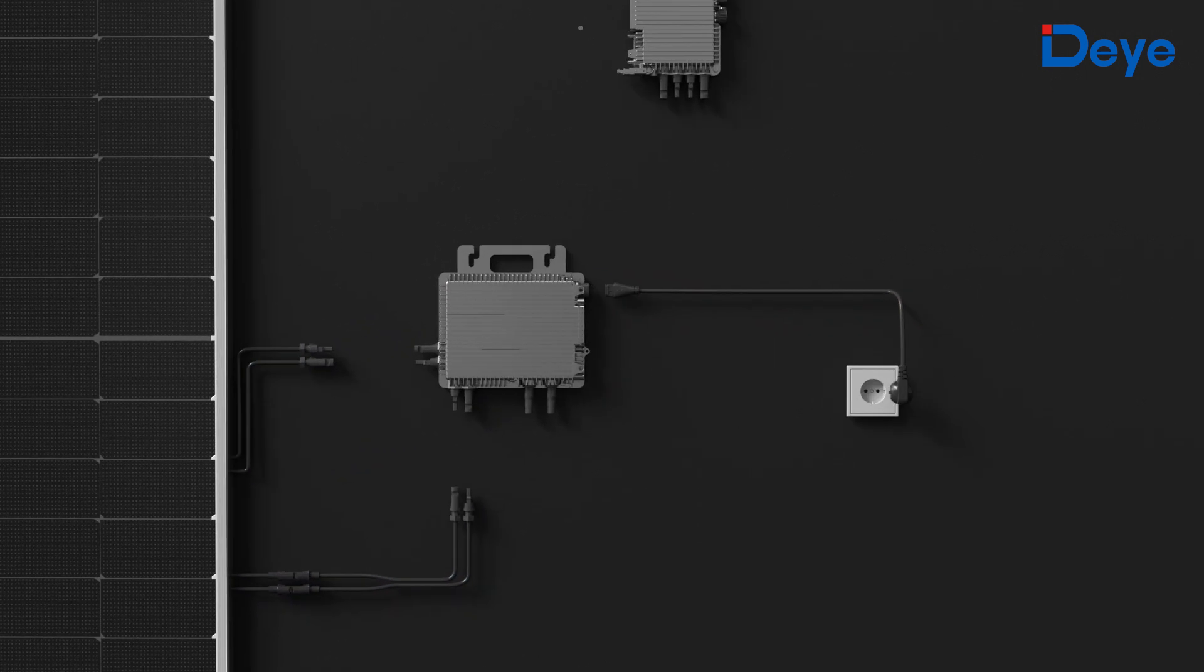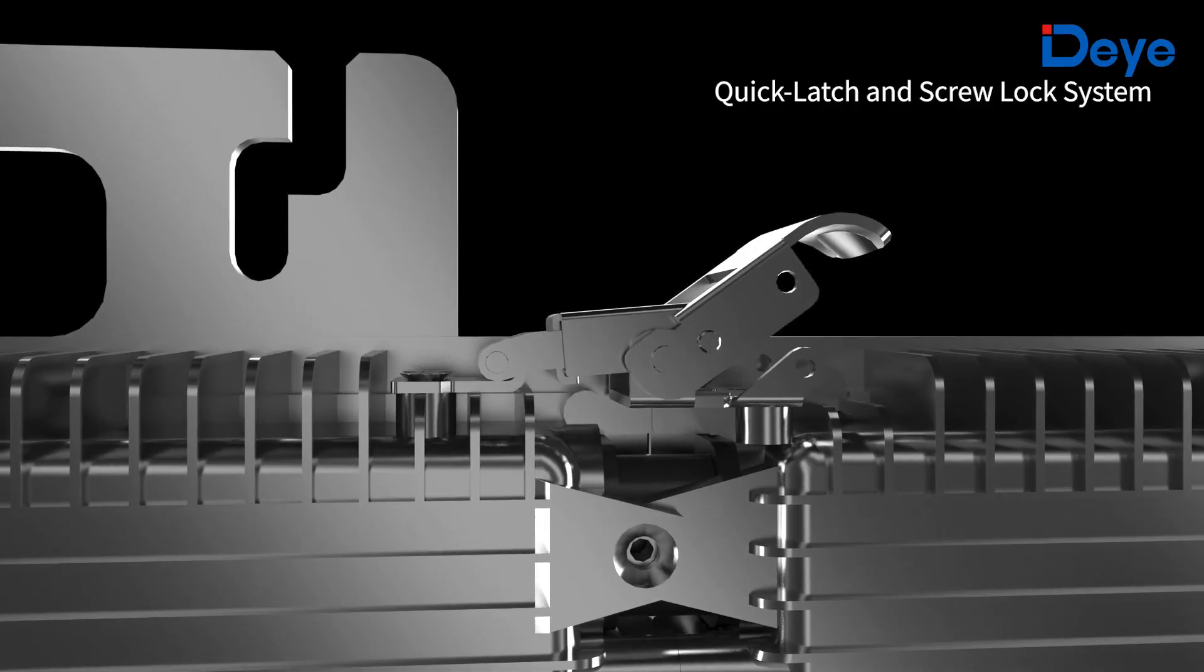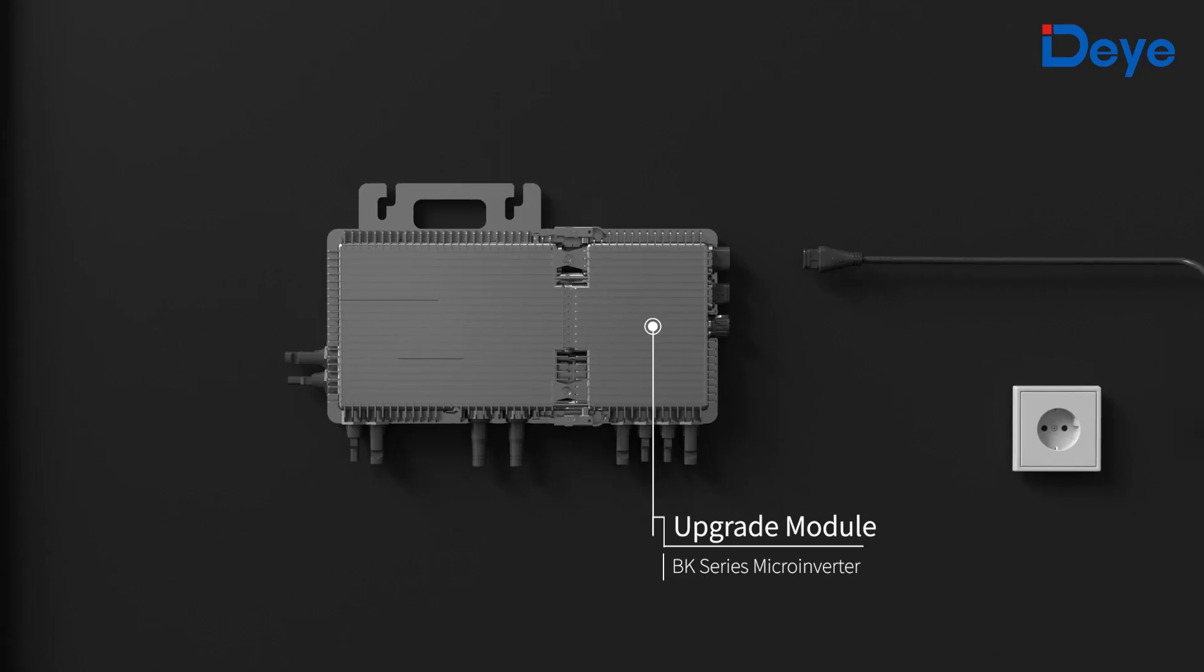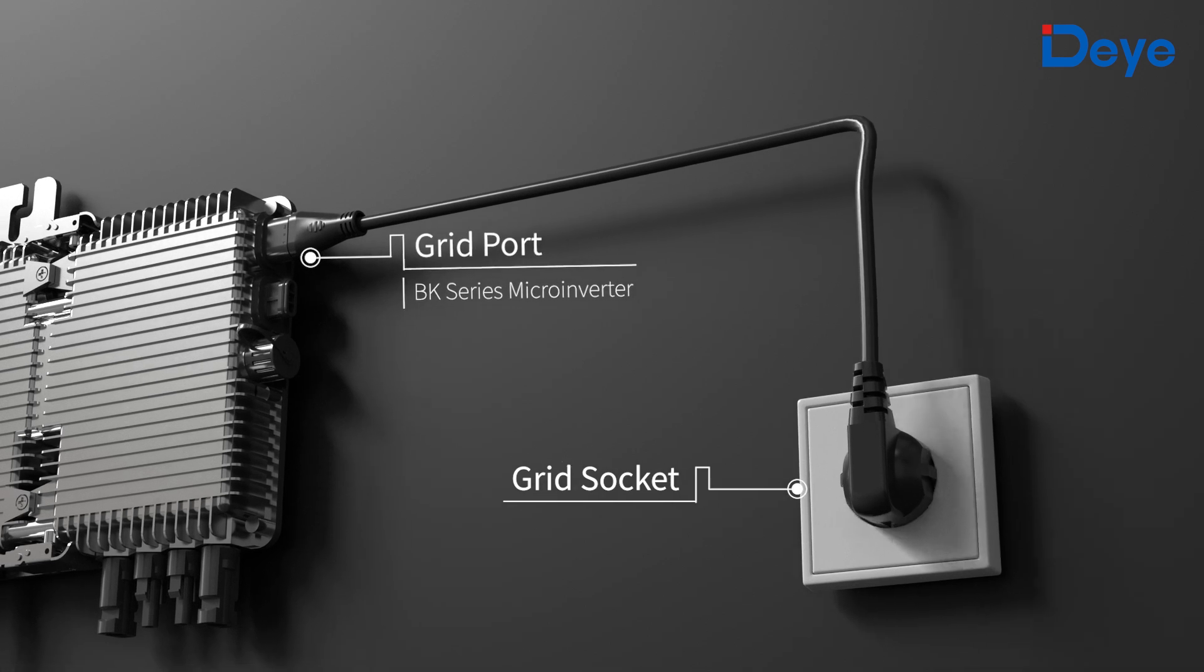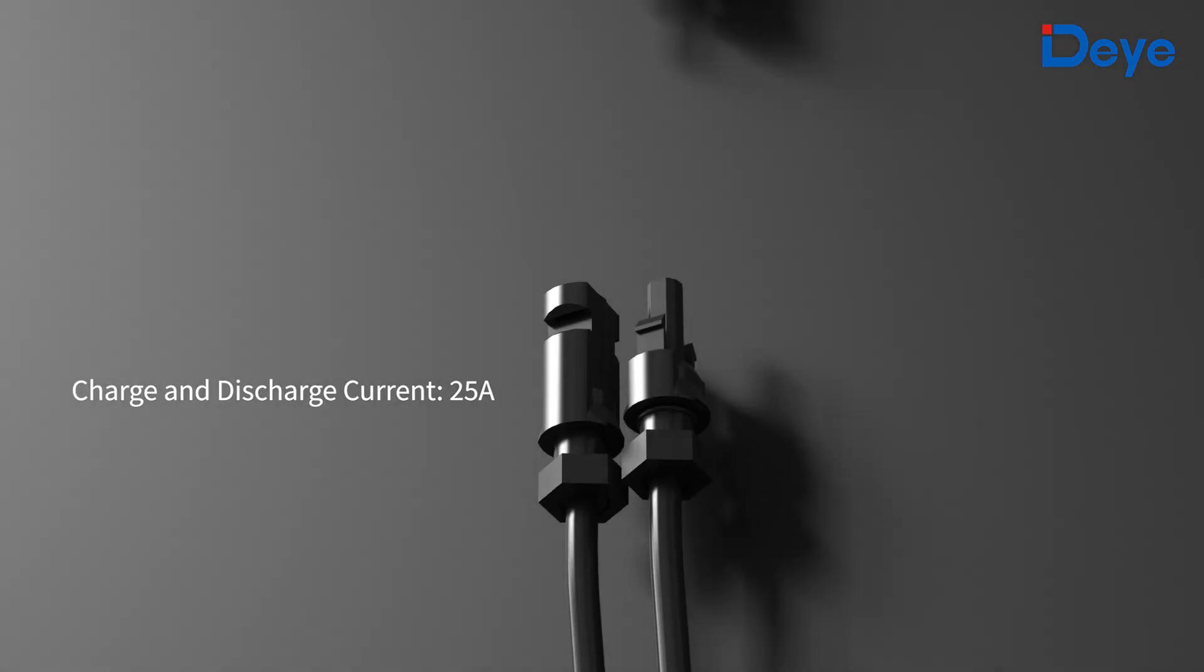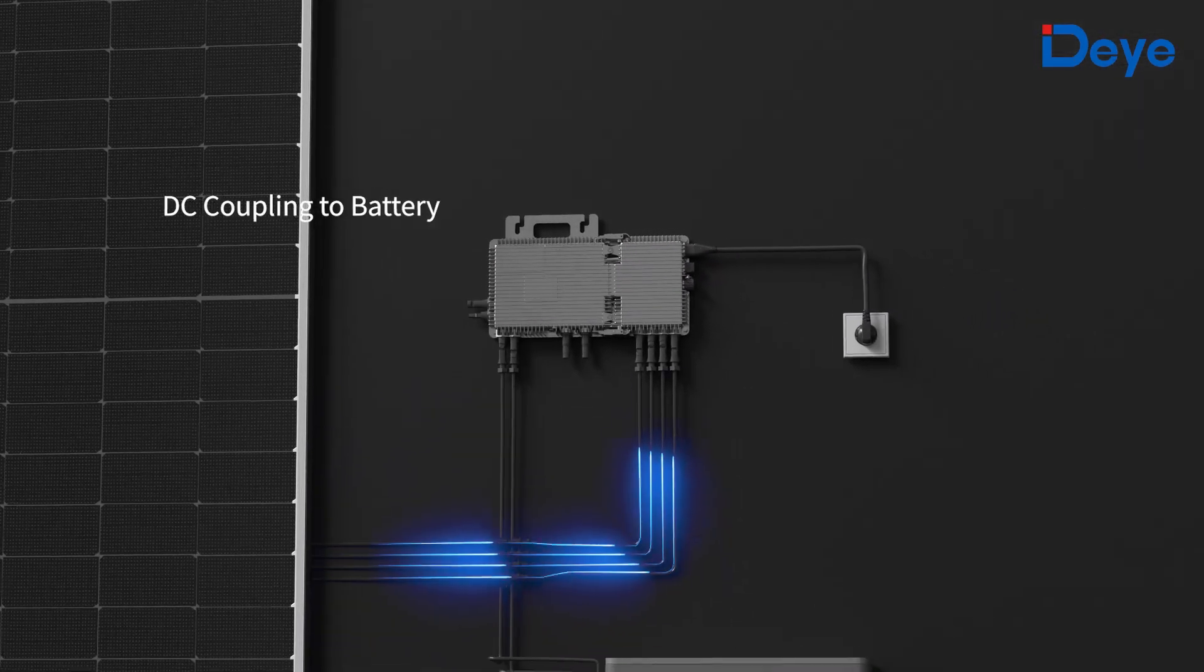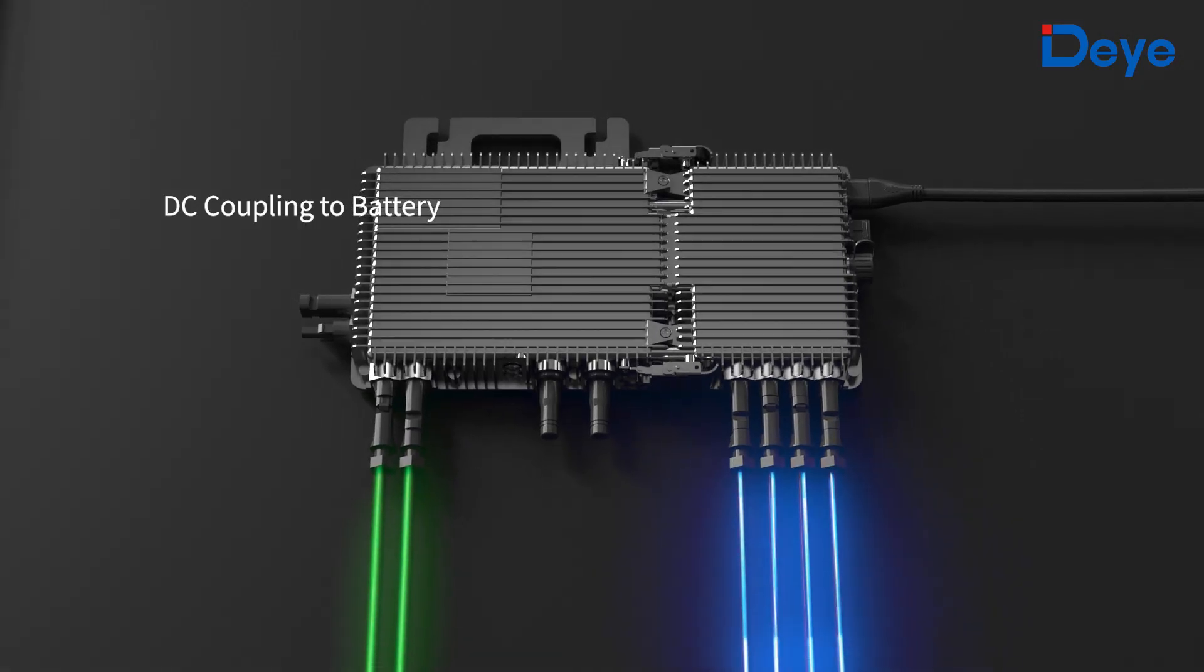By adding an upgrade module and battery, it can be upgraded to an energy storage system. Two sets of DC ports on the base module are for connecting to the battery, and two sets of photovoltaic ports on the upgrade module are for connecting to the photovoltaic panels.